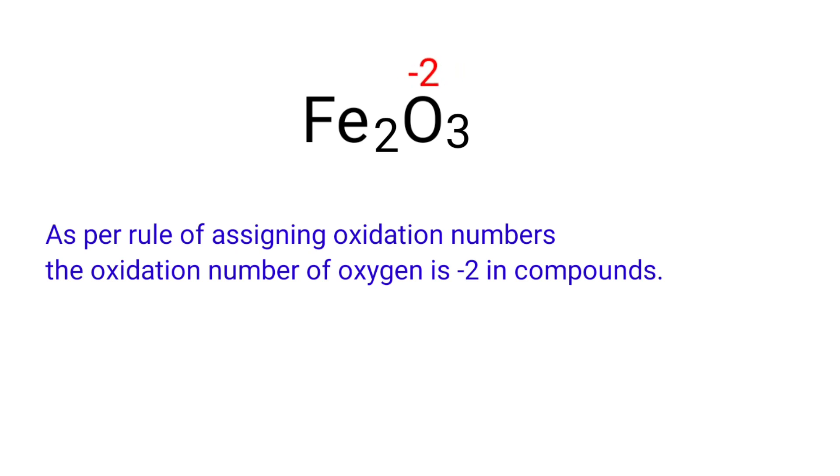We can write the oxidation number of the element above its symbol and the total number of the oxidation number of the atoms below its symbol.